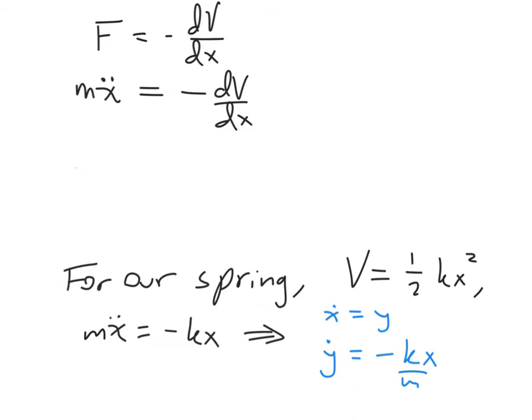For our spring, the potential energy was 1/2 k x squared. So we have the equation of motion: m x double dot equals negative k x.